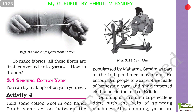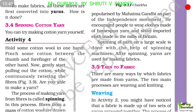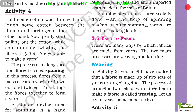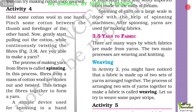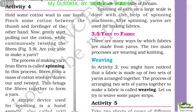Spinning of yarn on a large scale is done with the help of spinning machines. After spinning, yarns are used for making fabrics. Yarn to fabric: there are many ways by which fabrics are made from yarns. The two main processes are weaving and knitting. In weaving, fabric is made up of two sets of yarns arranged together.